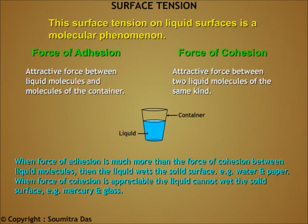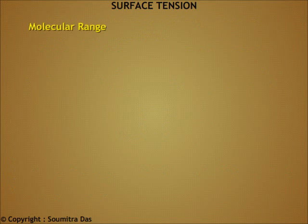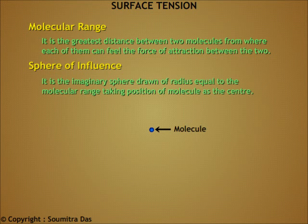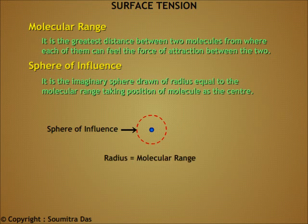When the force of adhesion is much greater than the force of cohesion between liquid molecules, then the liquid wets the solid surface — for example, water and paper. When the force of cohesion is appreciable, the liquid cannot wet the solid surface — for example, mercury and glass. Molecular range is the greatest distance between two molecules from where each can feel the force of attraction. The sphere of influence is the imaginary sphere of radius equal to the molecular range, drawn with the molecule as the center.